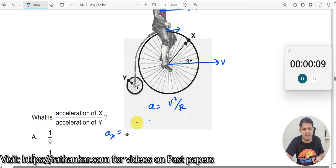AX will now be equal to V squared divided by R. What is R here? R here is nothing but 3R. 3R. And AY. What is AY? V squared divided by R over here.